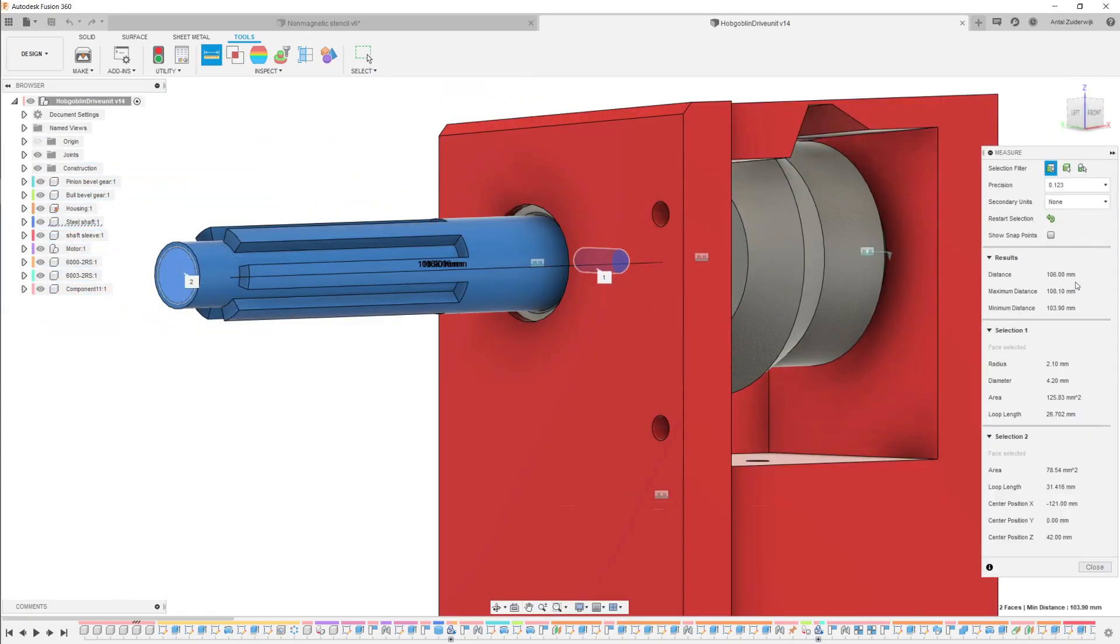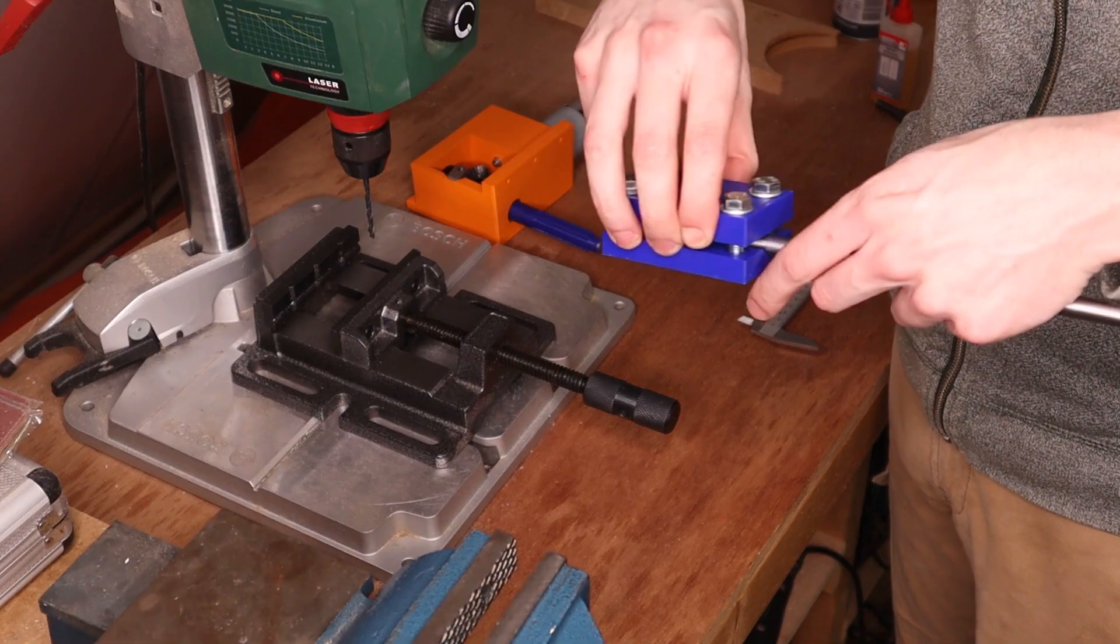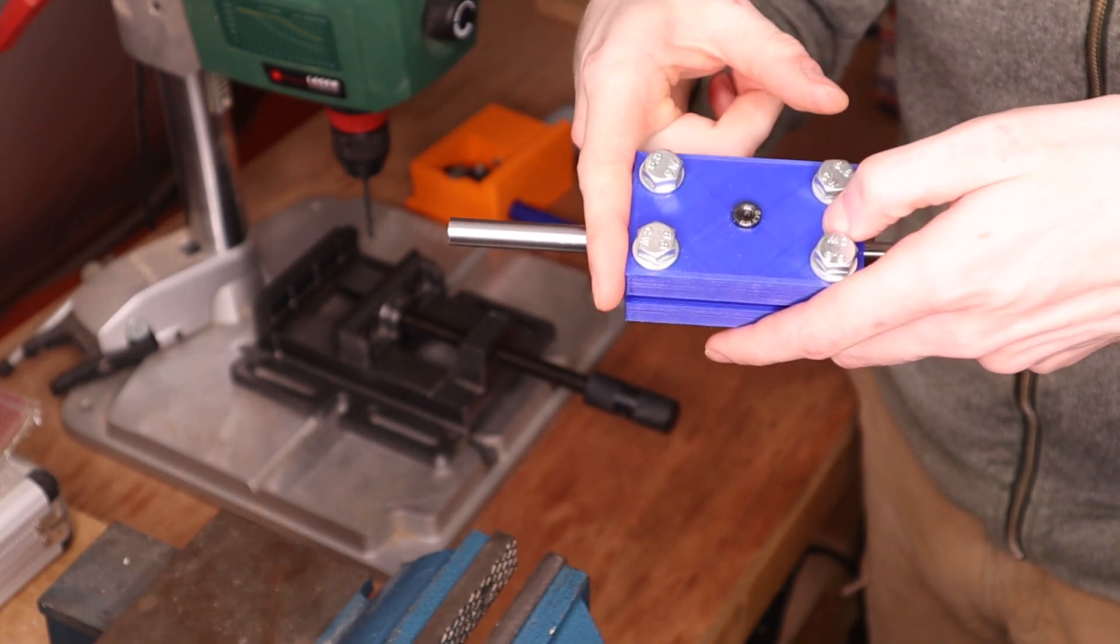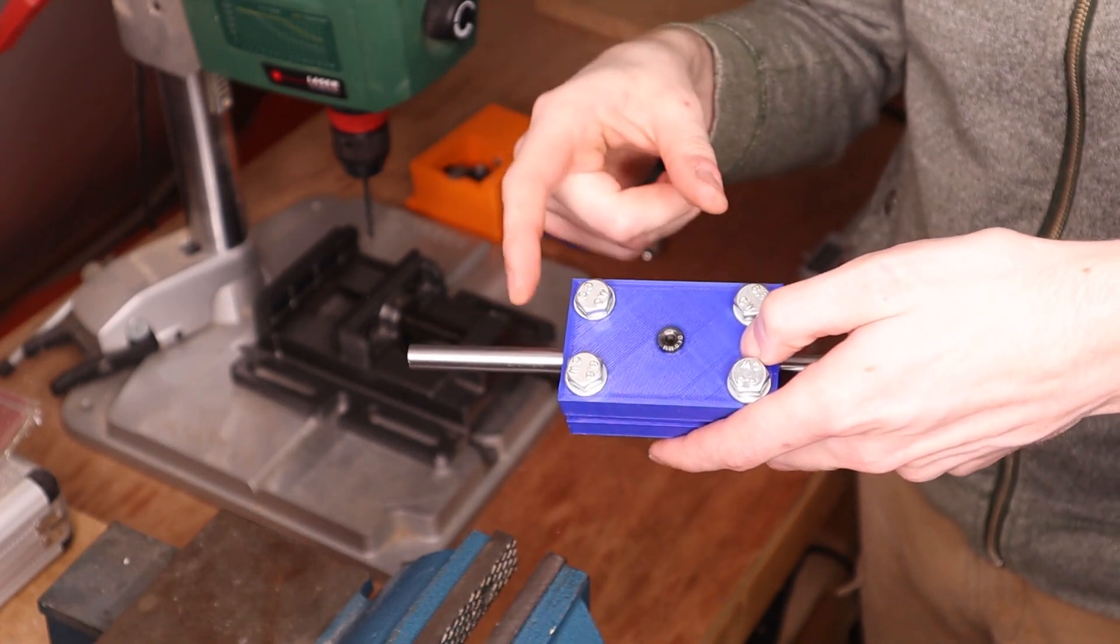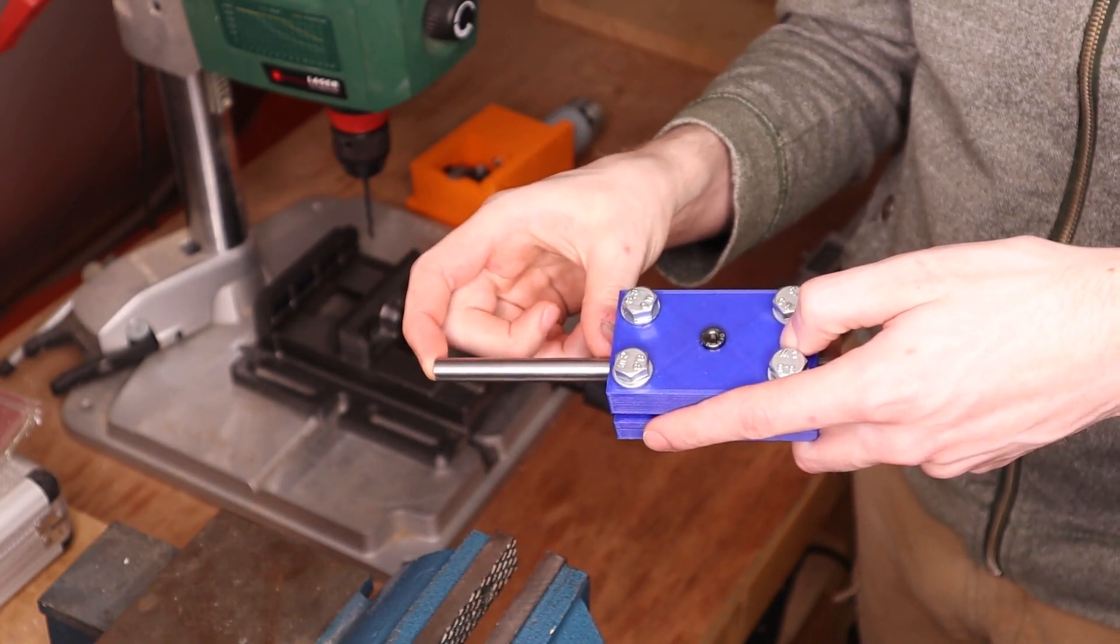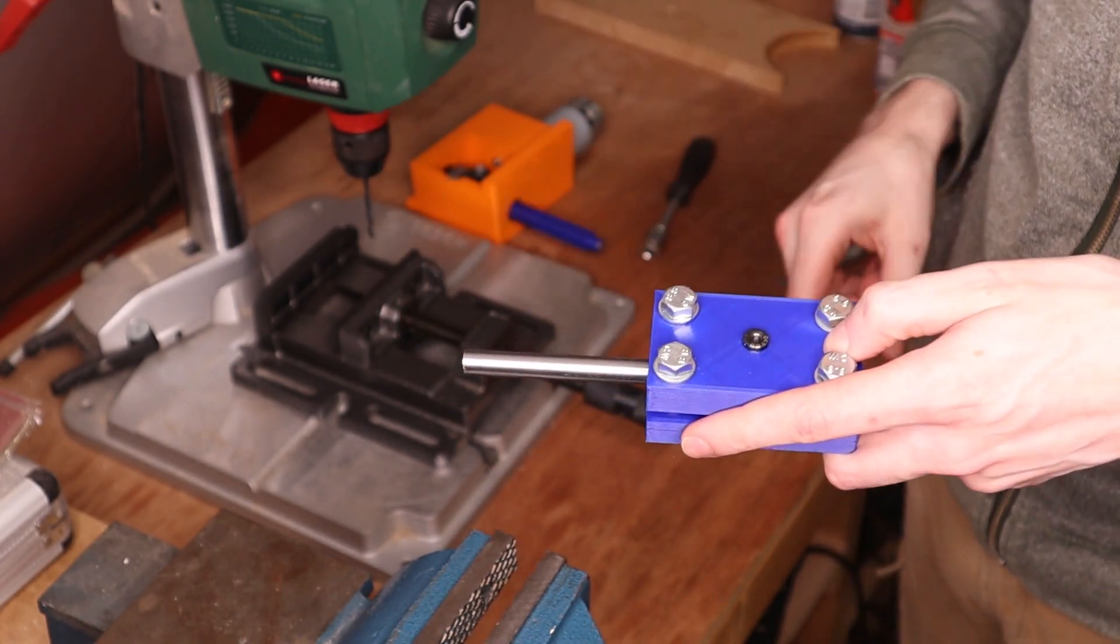Now I can put the shaft through the jig like this, and I know that the distance from the edge of the jig here to the hole is 40 millimeters. So I need to ensure that the shaft sticks out by 66 millimeters.